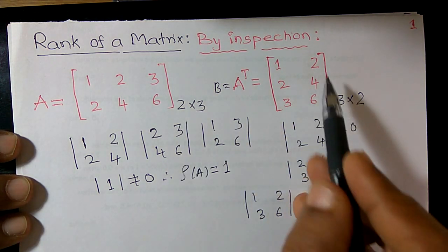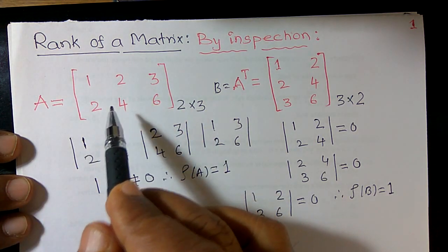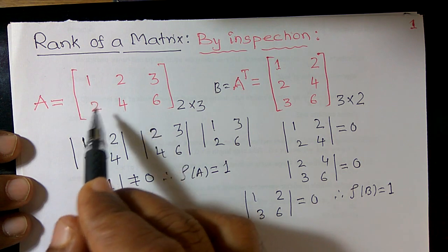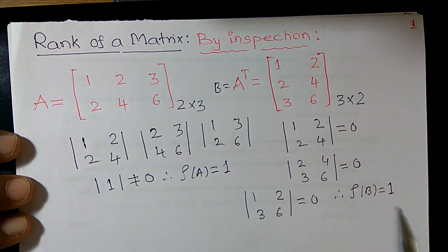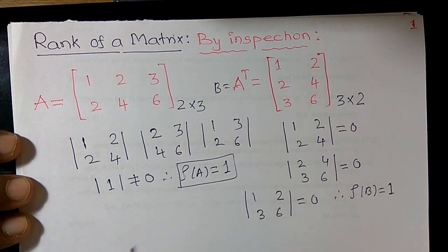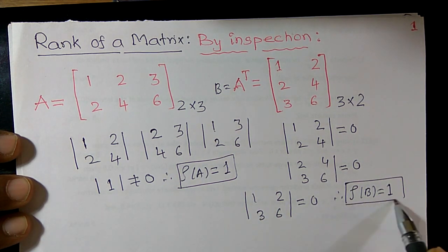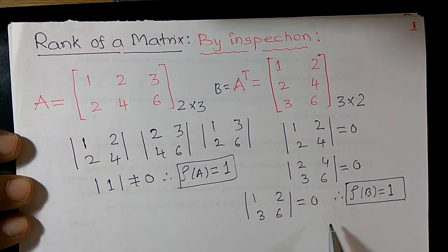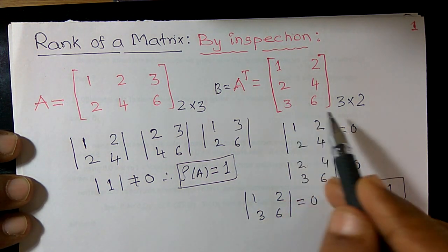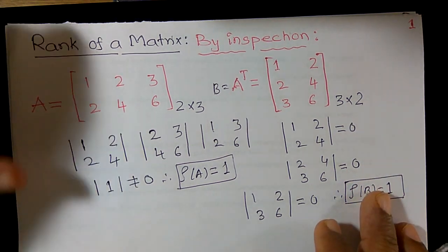Observe — this matrix B is the transpose of A. It means the rank of A and the rank of its transpose remain the same. Rank of A is equal to 1, and rank of transpose of A is also equal to 1. We can say that the rank of this matrix may be maximum 3 or maximum 2.